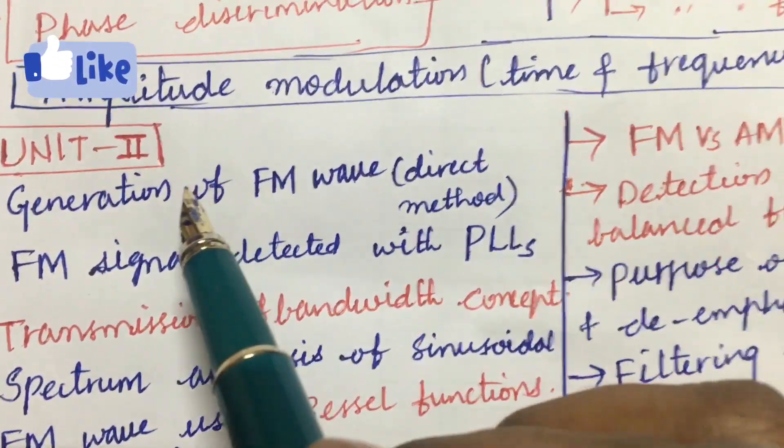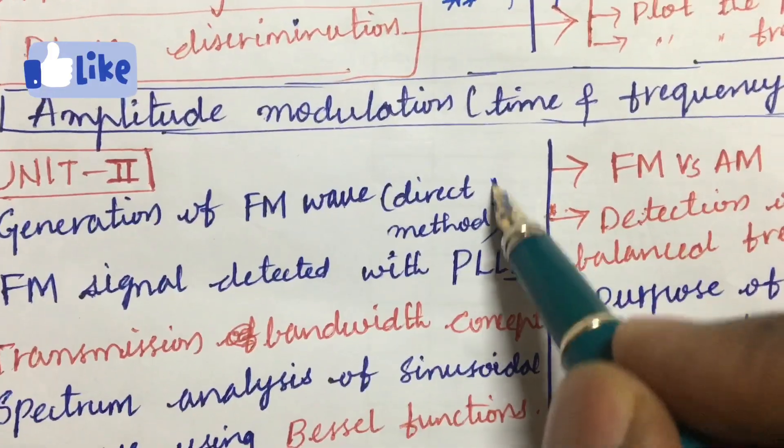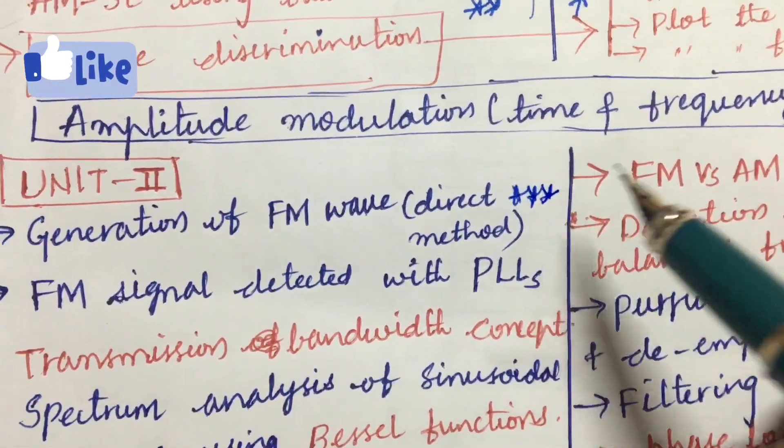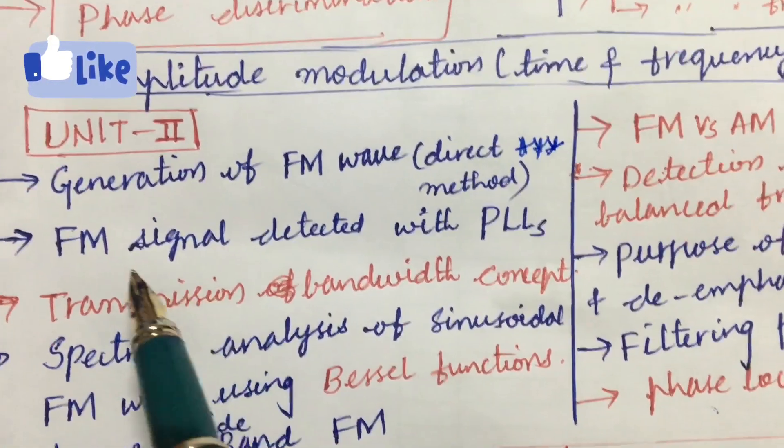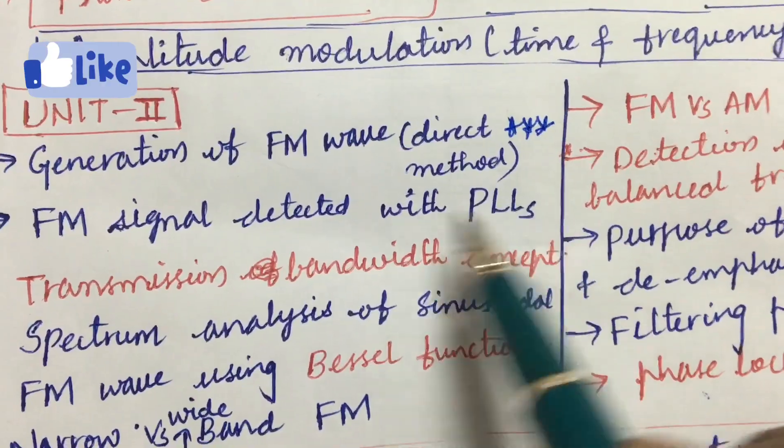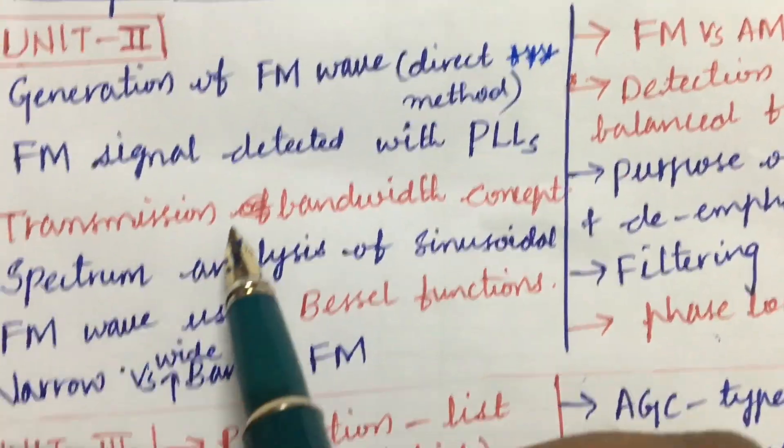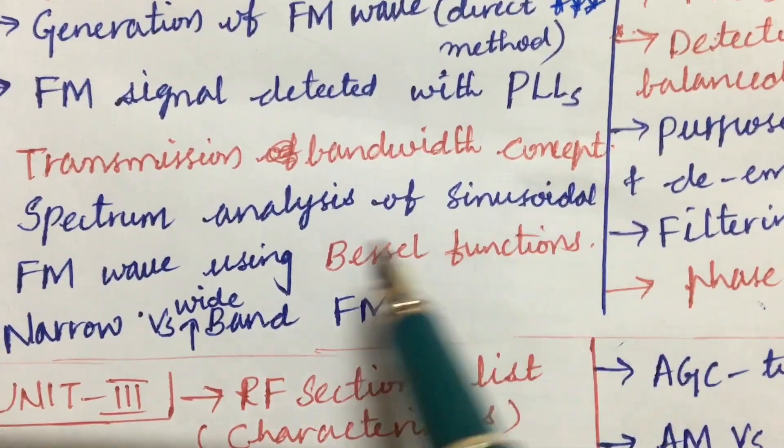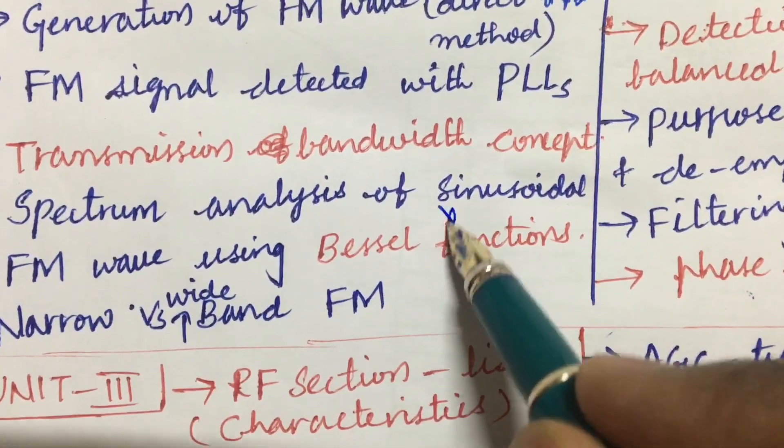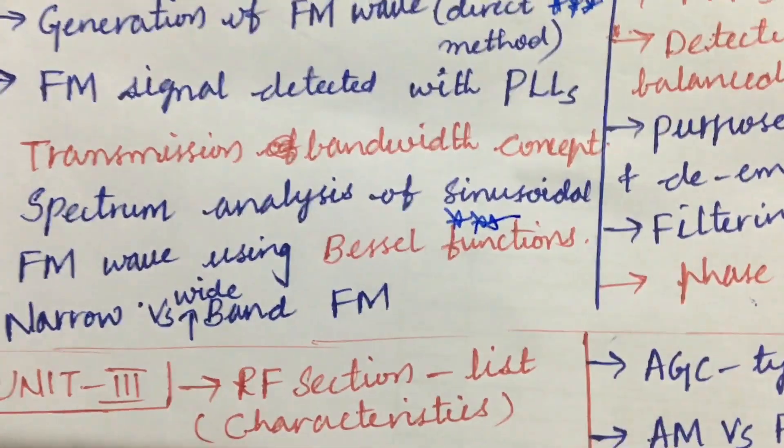Dear students, let's look at the third and fourth question. It is all about the generation of FM wave, direct method is a gunshot question where I am putting the star mark, I hope you are understanding. FM signal detected with PLLS and transmission bandwidth concept, and the spectrum analysis of sinusoidal FM wave using Bessel function is one of the very very important and gunshot questions.